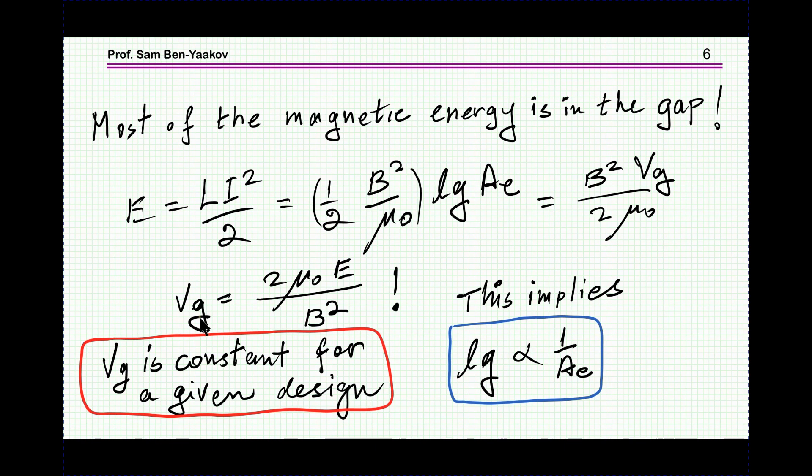These numbers here are fixed for a given design of a core. They are independent of the form of the core or the shape of the core or the type of the core. This expression says that the volume of the gap that you need is constant; it's independent of the type of the core.